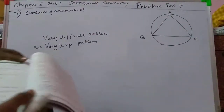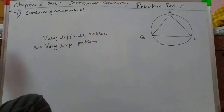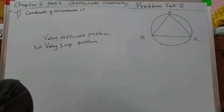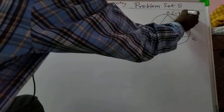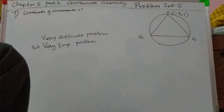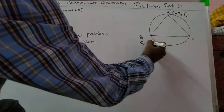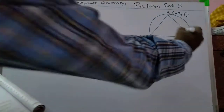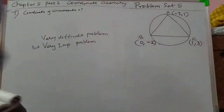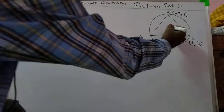Problem 7: we have to find the coordinates of the circumcenter. The three vertices are A(−3, 1), B(0, −2), and C(1, 3). Let us take the circumcenter as point O(A, B), which we want to find.